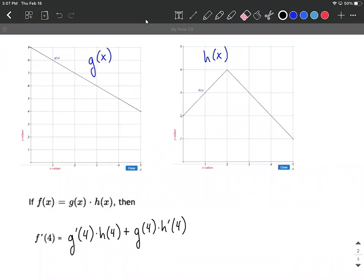The first piece of information we want to find is g prime of 4. We have an x value of 4, and we locate the point on the graph here. When we're talking about the derivative, we're talking about the slope of the secant line. So we want to calculate the slope of this line, which will be the same thing as the slope of its secant line.